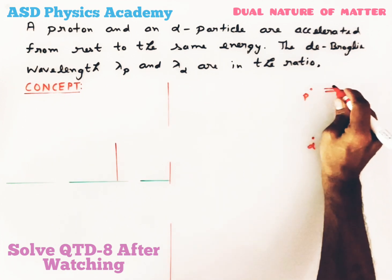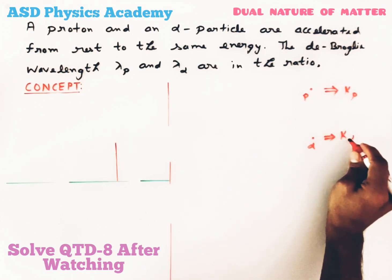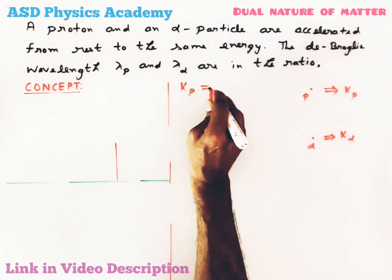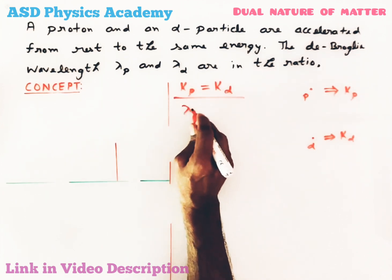According to the question, I have taken two particles: one is proton and one is alpha particle. Let's take proton is moving with kinetic energy Kp and alpha particle is moving with kinetic energy Kα.